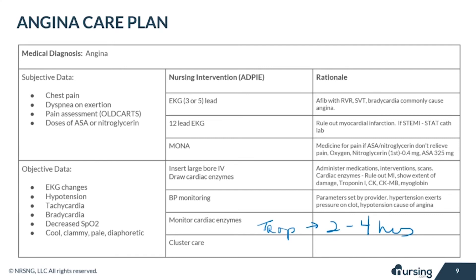CKMB, which is creatinine kinase MB, is also an enzyme that is found in cardiac muscle. When cardiac muscle cells are damaged, this enzyme is released into the bloodstream. CKMB should be measured at admission and then every eight hours after. Finally, an important intervention is clustering care. This allows the patient to rest by doing multiple things in a short time to allow for longer breaks for the patient, decreasing their myocardial oxygen demands.